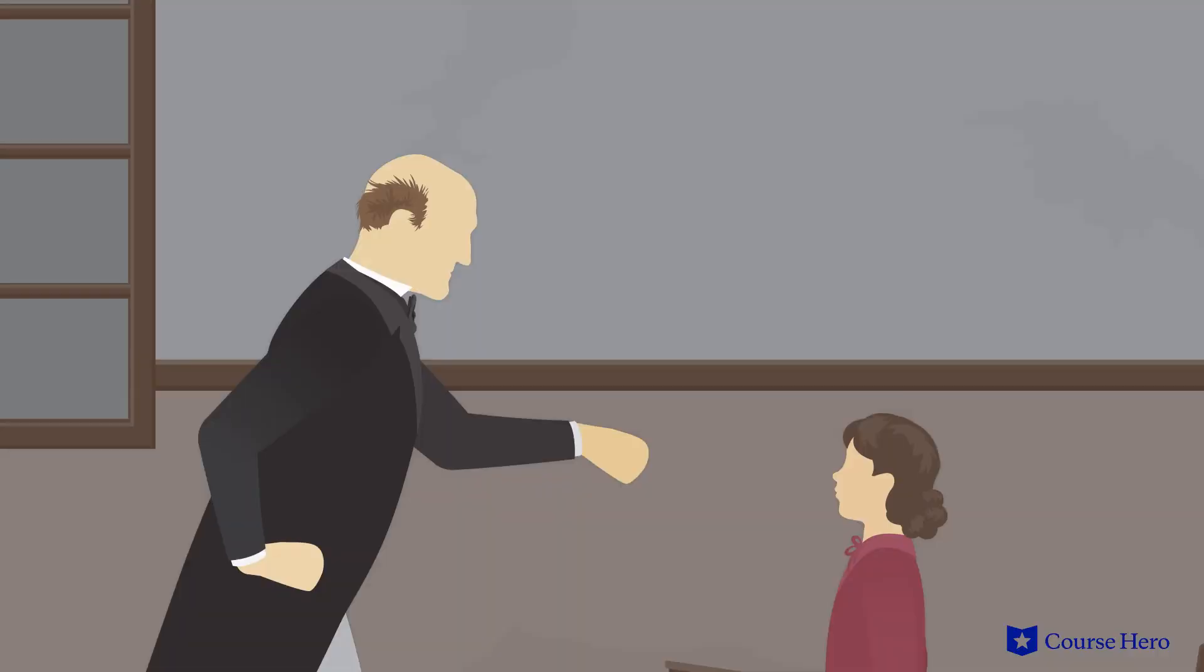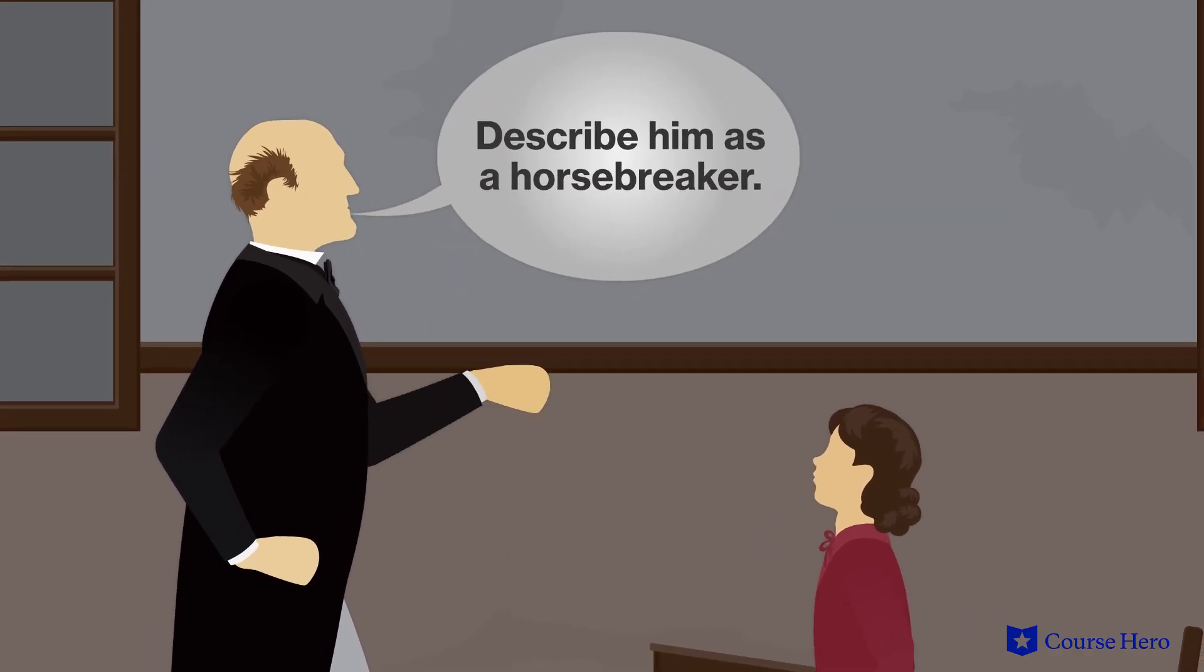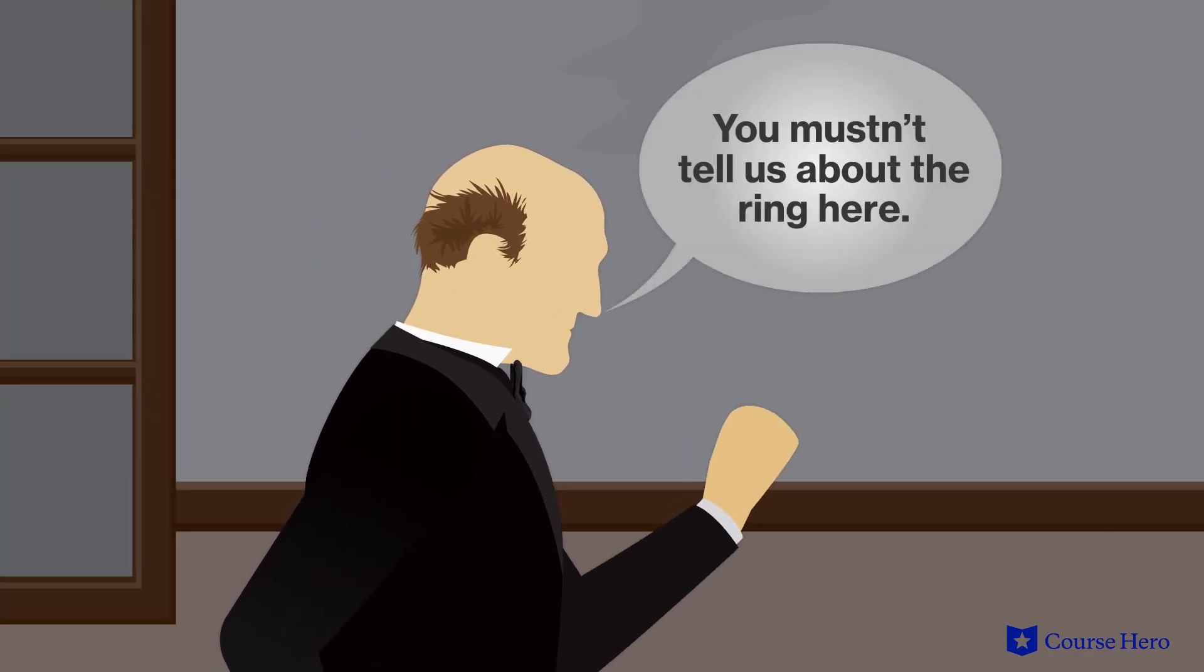When Mr. Gradgrind learns her father works for the circus, he tells her to describe him as a horse breaker, adding, you mustn't tell us about the ring here. He then tells her to call her father a veterinary surgeon because he treats the horses when they're sick.